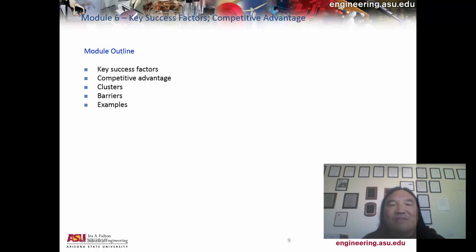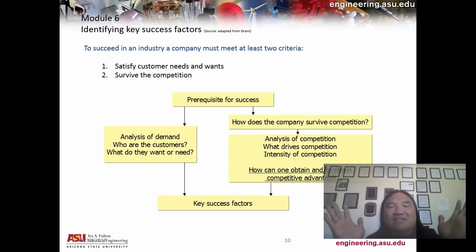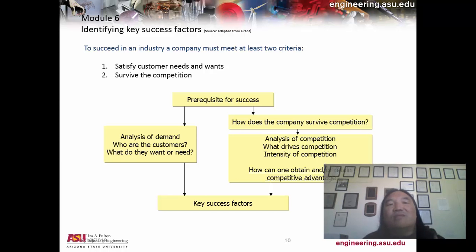We'll talk about some of the barriers involved that you set up for competitive advantage. What we're talking about today are key success factors, competitive advantage, clusters, barriers, and some examples. What do we need for success? There are two parts: one is how well we serve our customers — creating value, delivering value, and supporting value.